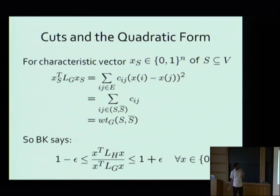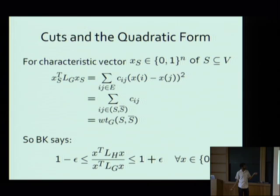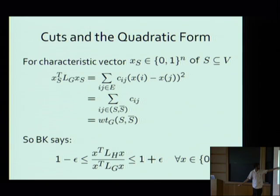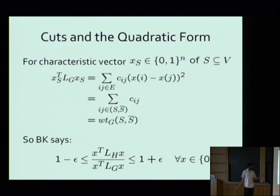Returning to cuts — the cut approximation notion of Benzer and Karger can be written cleanly in terms of the quadratic form. If I take any cut S, look at the characteristic vector x_S of that cut, and evaluate the quadratic form at this vector, I get the total weight of edges crossing the cut — the only non-zero terms are those corresponding to edges i,j with one endpoint inside S and one outside. So Benzer-Karger is really saying: for every graph G I can find a graph H so that the Laplacian quadratic forms are approximated up to 1 plus or minus epsilon on all 0-1 vectors.